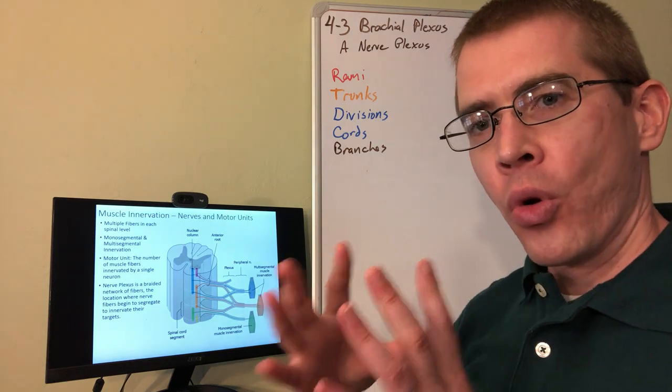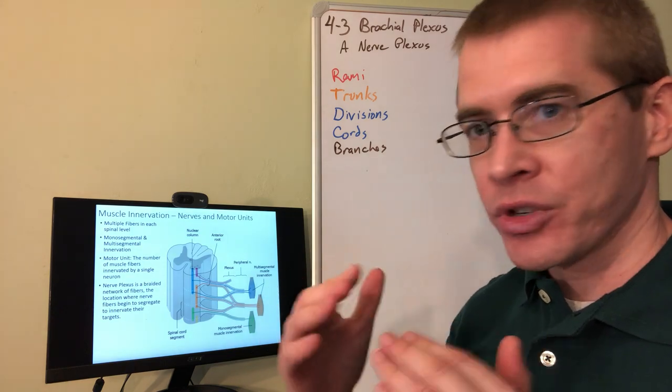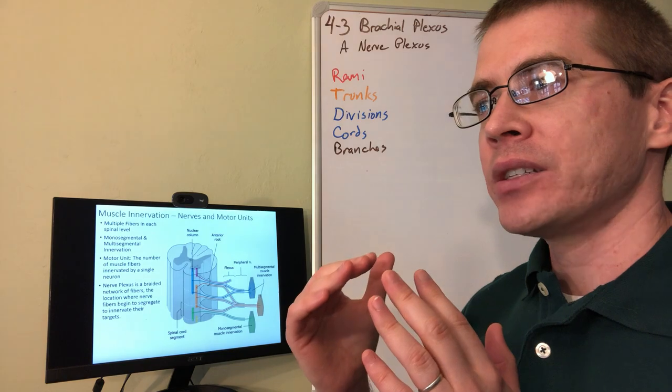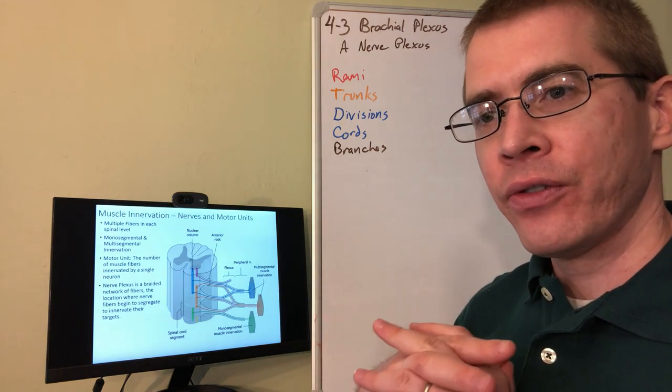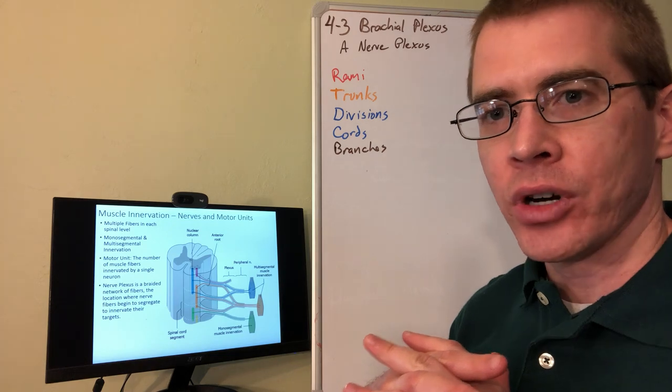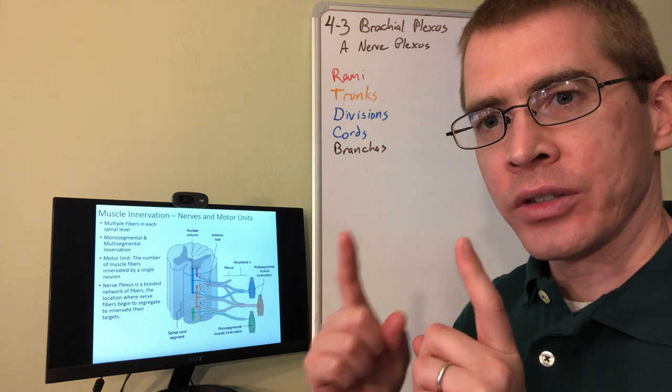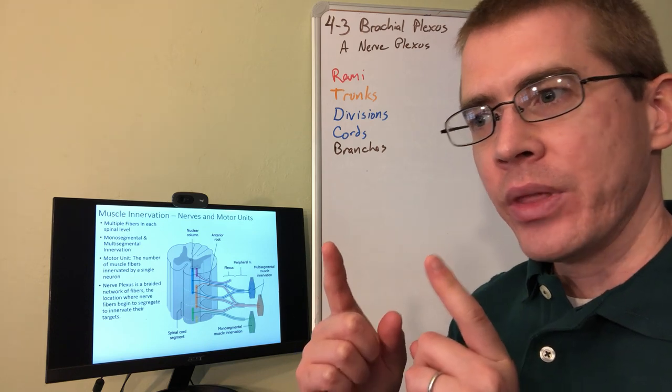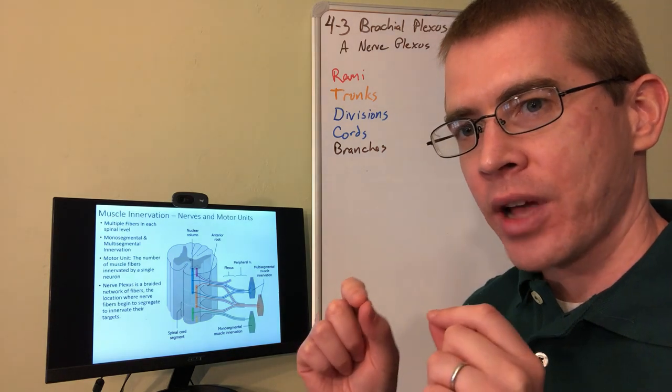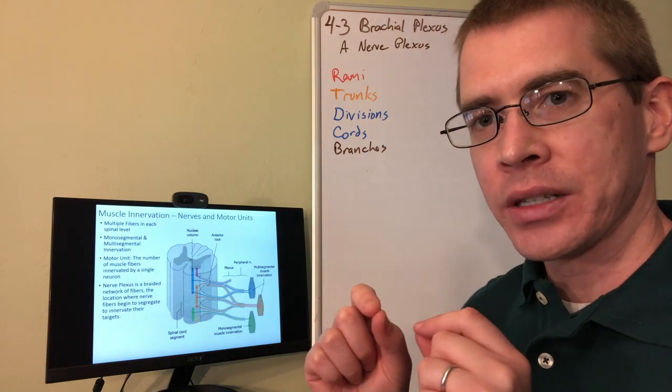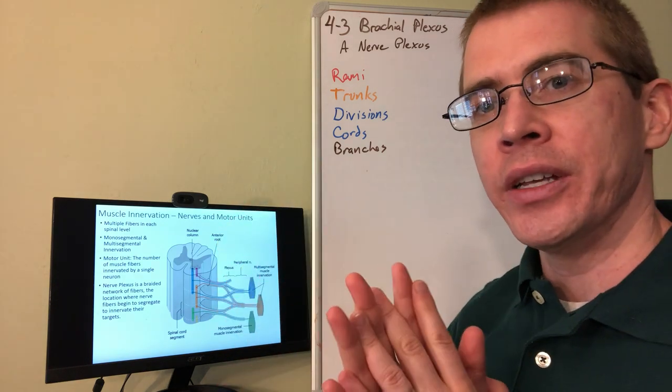So the more muscle fibers, the more muscle cells (fibers and cells is the same thing), that receive innervation from one neuron, the less fine control you have over that muscle. So if there's a one-to-one ratio of neuron to muscle fiber, then you can activate just one microscopic fiber within a muscle at a time and change the force of that muscle across a huge gradient.